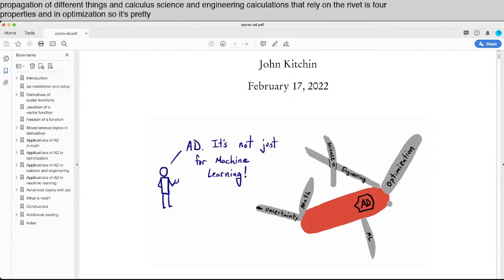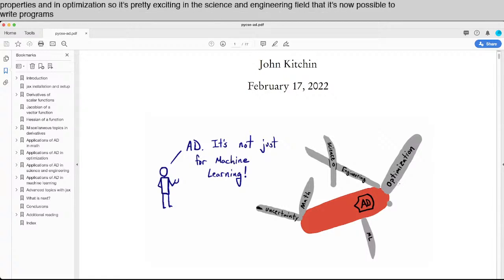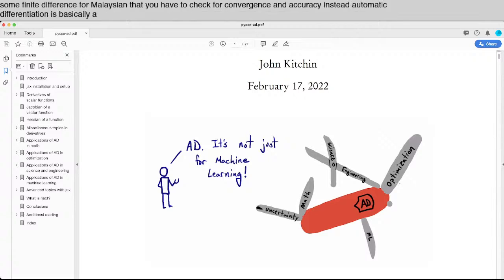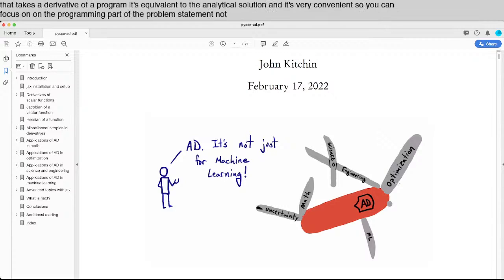So it's pretty exciting in the science and engineering field that it's now possible to write programs that use derivatives where it's not necessary to derive and then implement the derivative or implement some finite difference formulation that you have to check for convergence and accuracy. Instead, automatic differentiation is basically a program that takes a derivative of a program, it's equivalent to the analytical solution, and it's very convenient, so you can focus on the programming part of the problem statement, not on the derivation and implementation.